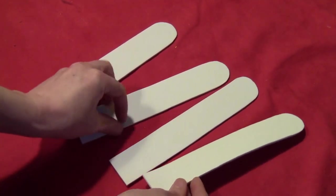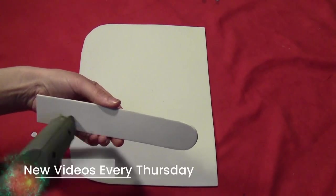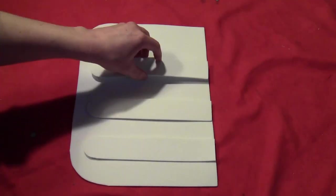Then cut some long thin rectangles with one end rounded. Glue those onto the piece you just cut, matching up the flat edges.